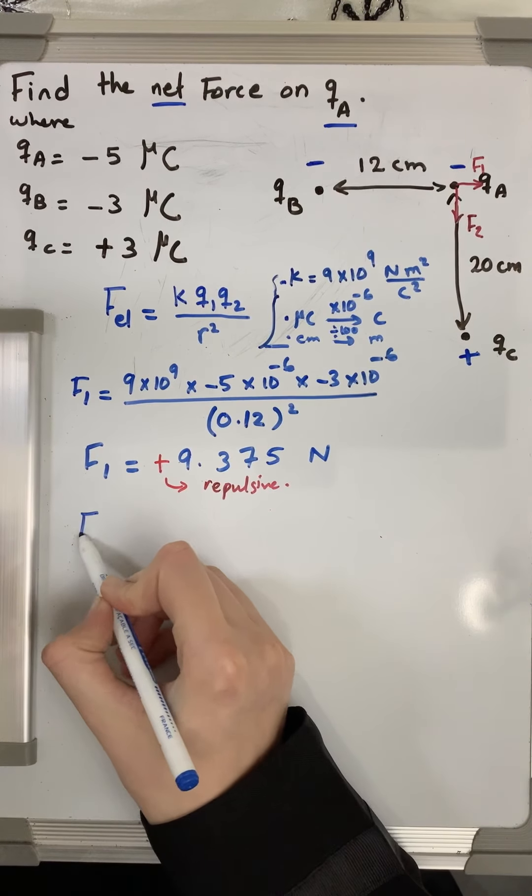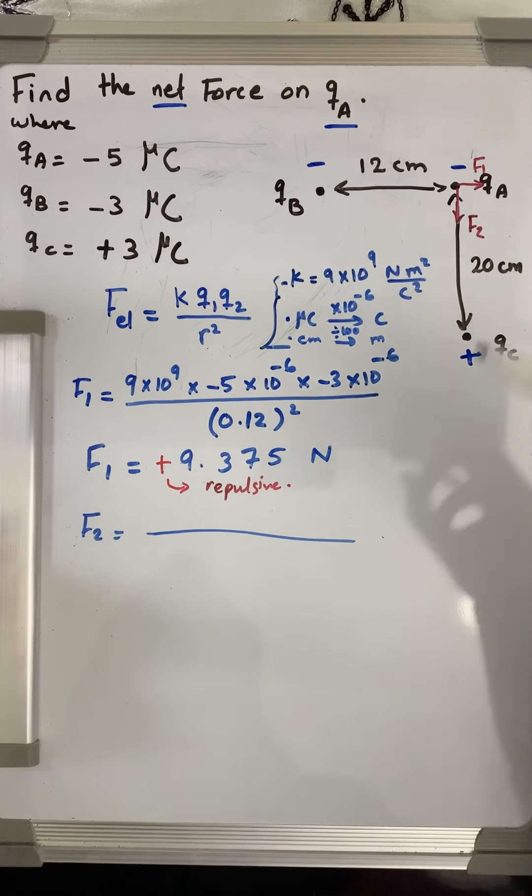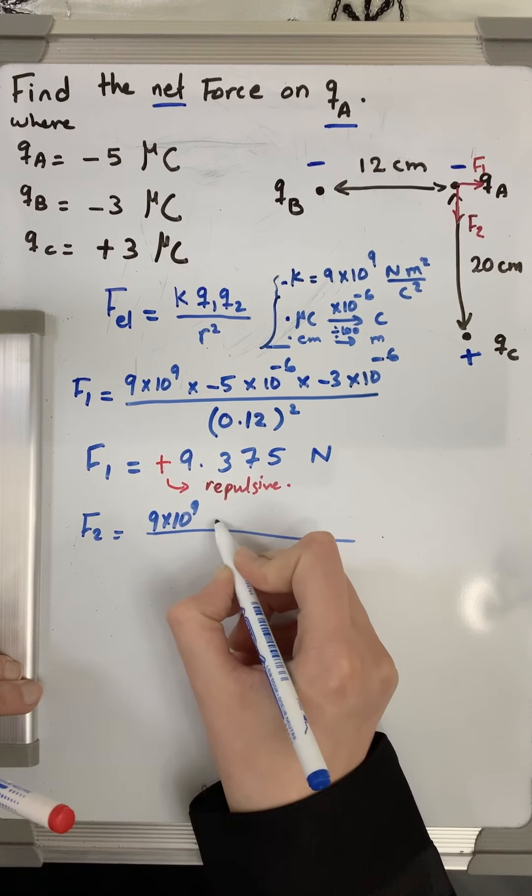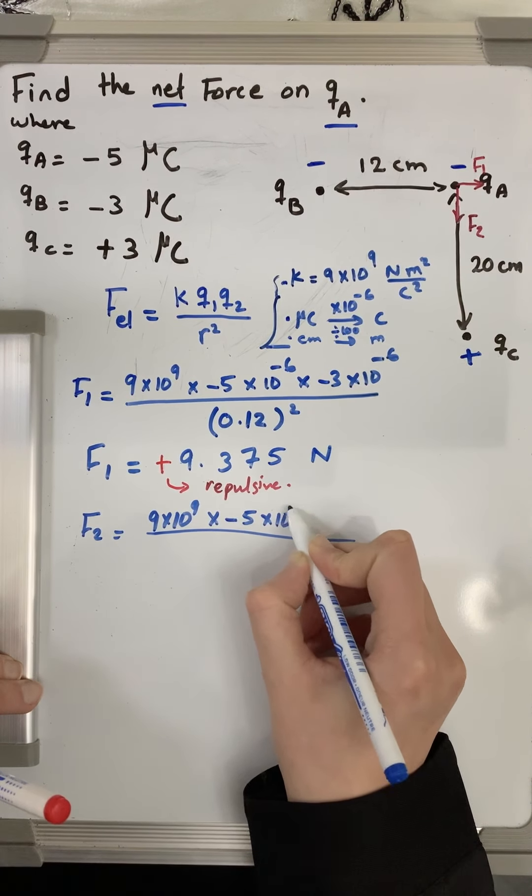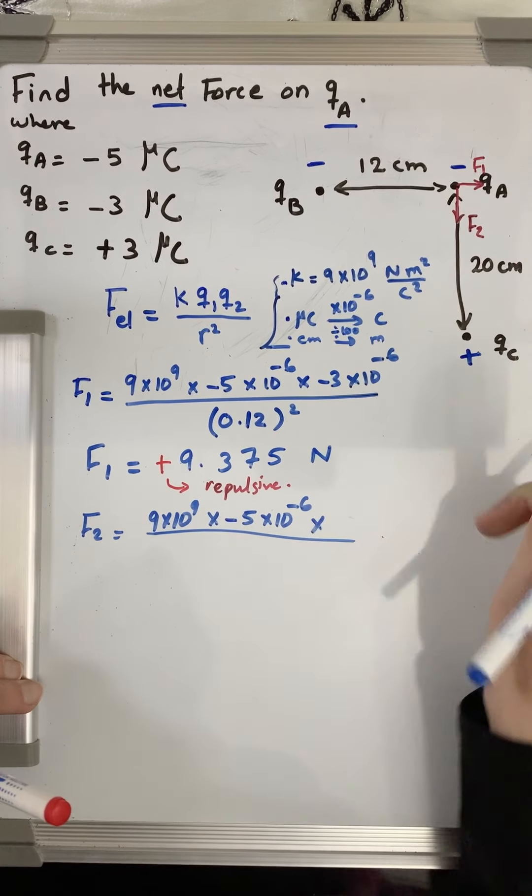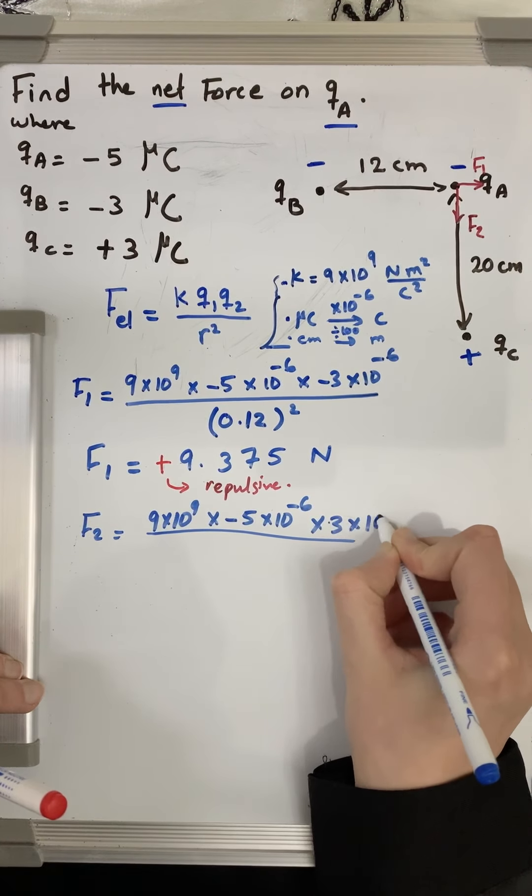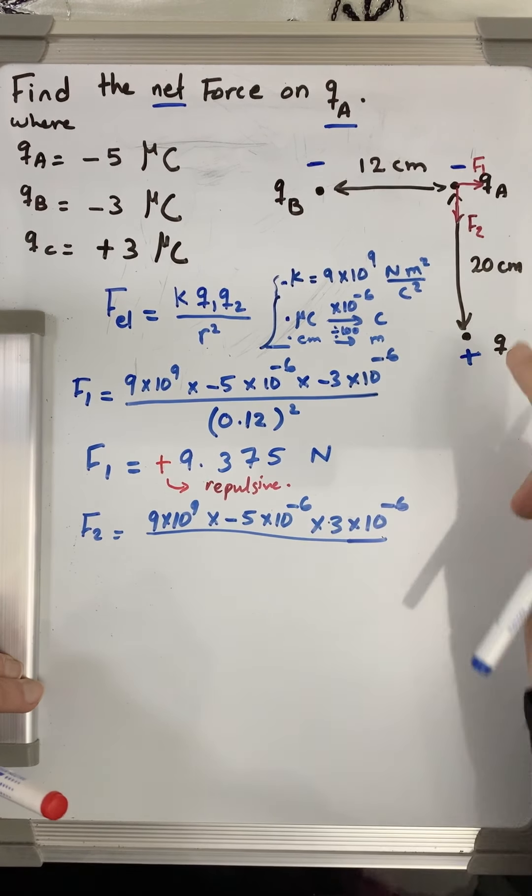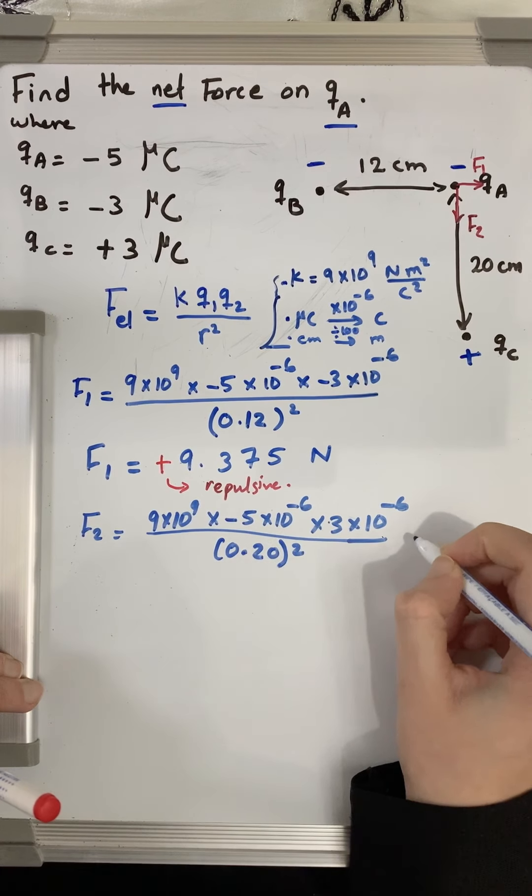Now similarly, we can use Coulomb's Law to calculate F2. For F2, it's the force between qa and qc, so we will start with the constant, Coulomb's constant, times the charge a: negative 5 times 10 to the power of negative 6, times c: plus 3 times 10 to the power of negative 6, divided by the distance in meters squared.